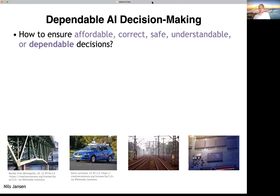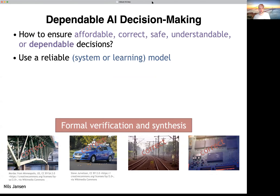So what do we see as dependable AI and decision-making? What we want to do is make sure that decision-making of AI systems is affordable, correct, safe, understandable, and in summary, somehow dependable. We use model-based approaches, and the standard idea would be to create such a model of an AI system and then use formal verification or formal synthesis to prove that there is correct behavior.